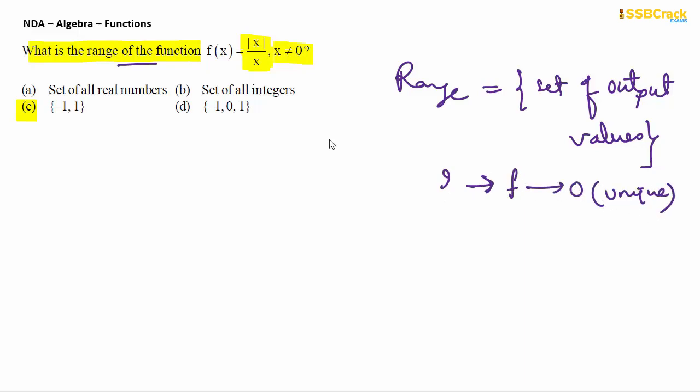If you use the definition of the function here, f(x) equals mod x upon x. There are two values of mod x: plus x when x is greater than 0, and minus x when x is less than 0. x equal to 0 is not allowed in the question.